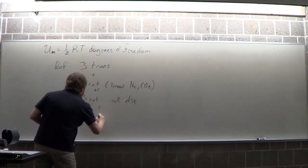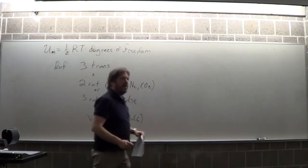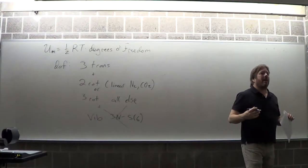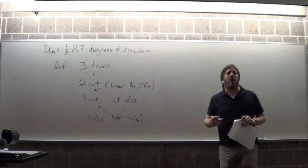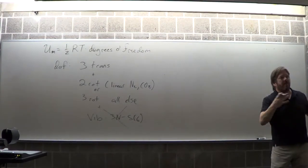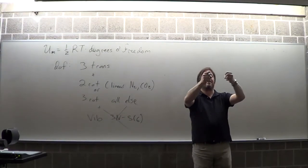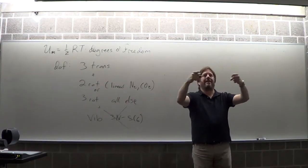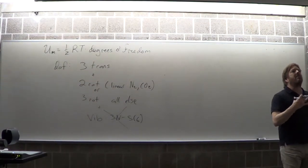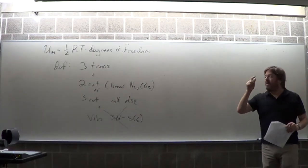Then there are vibrations — 3N minus 5 or 6 depending on rotations — but they don't really contribute for the reasons we discussed: you need to be able to put energy in and take it out. Vibrations just sit there. N₂ just vibrates unless it gets really hot, so we just forget the vibrations. Room temperature energy (RT) is almost enough to start exciting vibrations, which is why you see heat capacities being a little bit higher than expected.